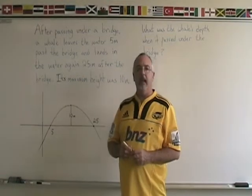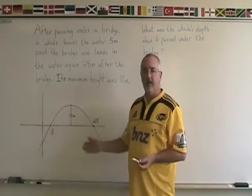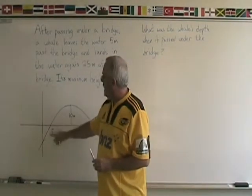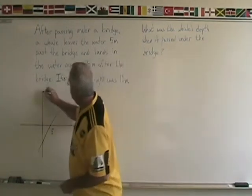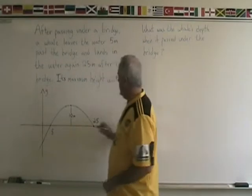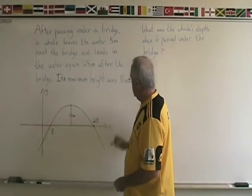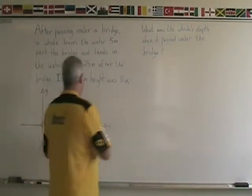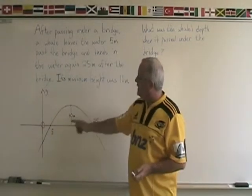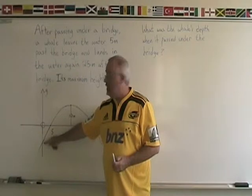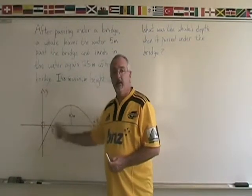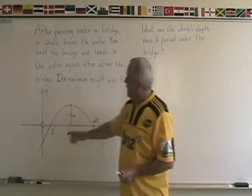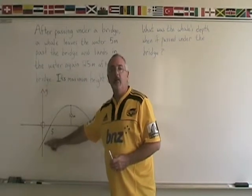When we solve a problem like this analytically, we must start by defining our axes and our origin. This diagram has been started, and we are defining this as our y-axis and this as our x-axis. Therefore, the origin will be right here. With the problem defined this way, we can see that the point where the whale passed under the bridge is the y-intercept of the curve. We are looking for a quadratic equation, and once we find it, we isolate its y-intercept and we have answered the question.